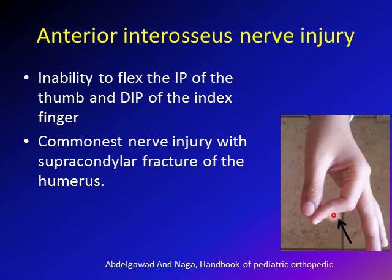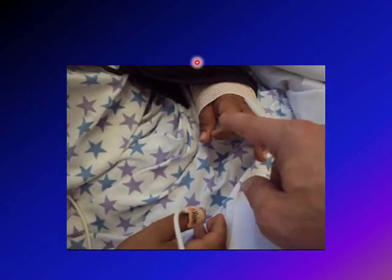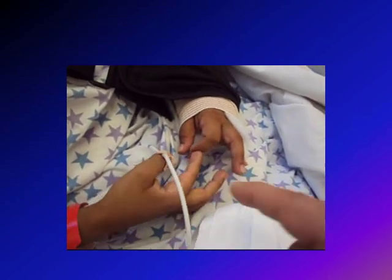Instead of flexing the DIP and IP to form the OK circle, the child will extend the DIP and push the pulps of the fingers together. In this video, a child with a supracondylar fracture of the humerus is asked to do the OK sign to assess the anterior interosseous nerve. This shows a failure to perform the OK sign — the patient was not able to flex the IP of the thumb or the DIP of the index finger.